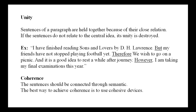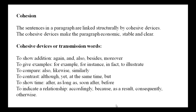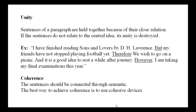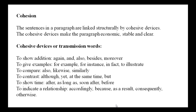The next feature is coherence. Sentences should be connected semantically — meaning they should be related in terms of their meaning. The best way to achieve coherence is to use cohesive devices. Cohesion refers to how sentences in a paragraph are linked structurally by cohesive devices, which make the paragraph economical, stable, and clear.